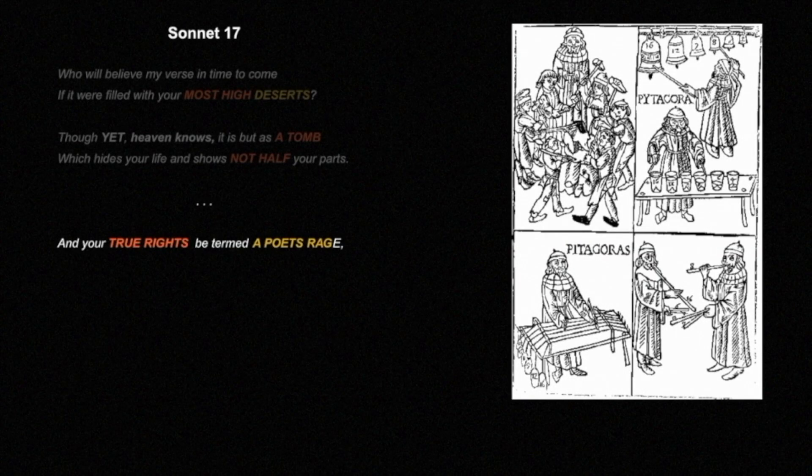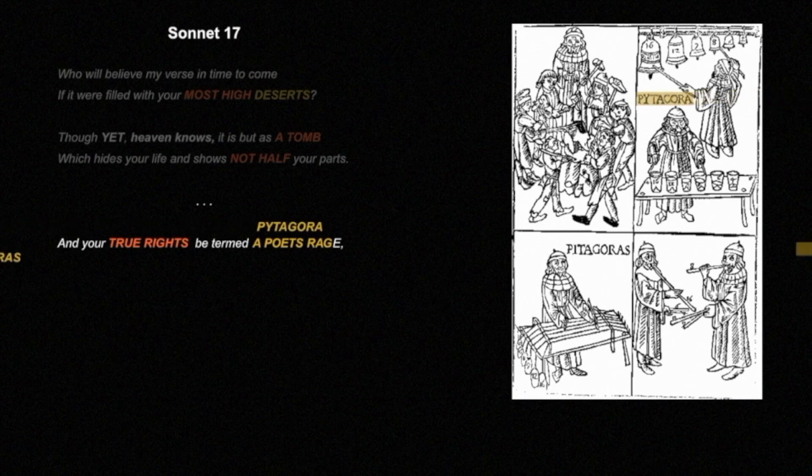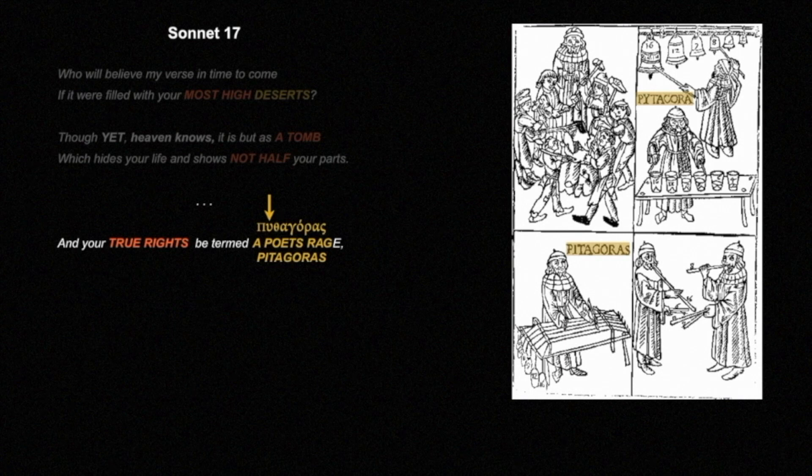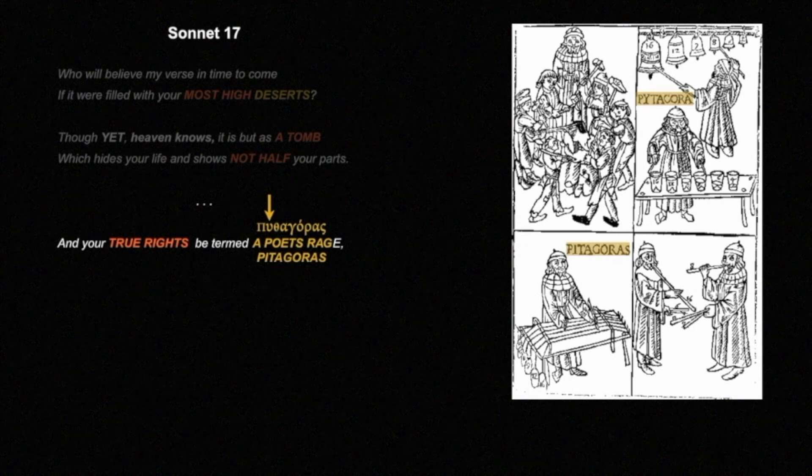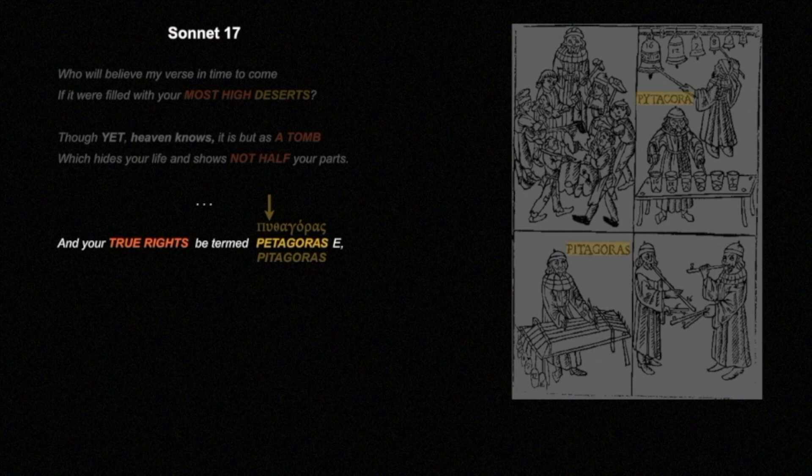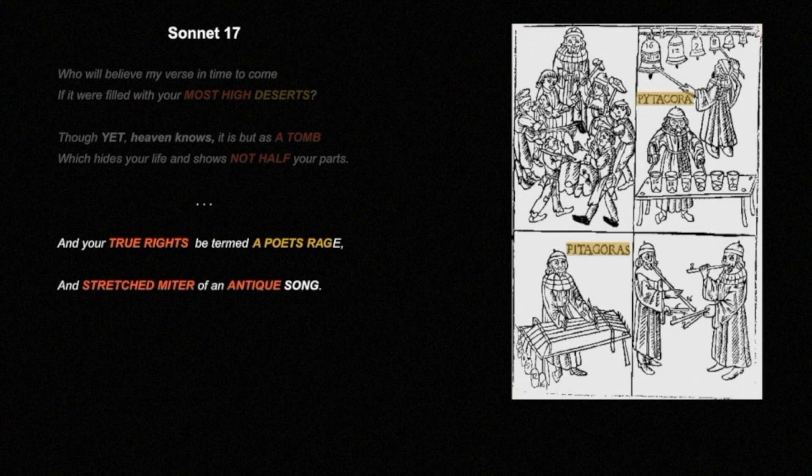Here is a 14th century woodcut. Note the spelling of his name in Greek, Pythagora or Pythagoras. The Greek letter upsilon, second letter in the word, is actually pronounced e or u. And indeed, he's telling us that in a poet's rage: Pythagoras.